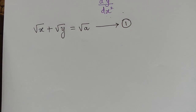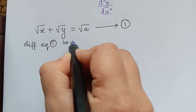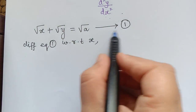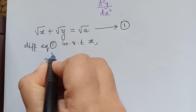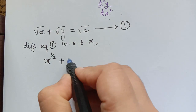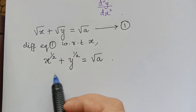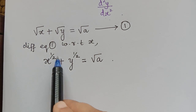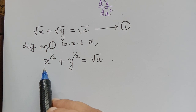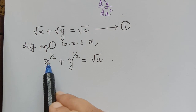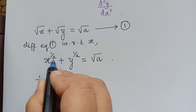First let us find dy/dx. For that, we have to differentiate equation 1 with respect to x. We shall rewrite it: √x can be written as x^(1/2), and √y as y^(1/2), equal to √a. Now we differentiate: using the formula d/dx(xⁿ) = nx^(n−1), the differentiation of x^(1/2) is (1/2)x^(1/2 − 1).